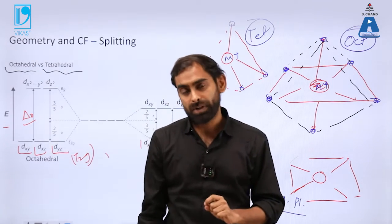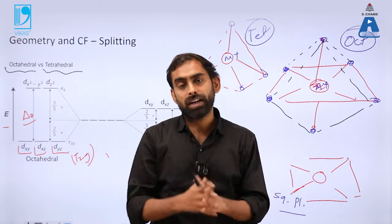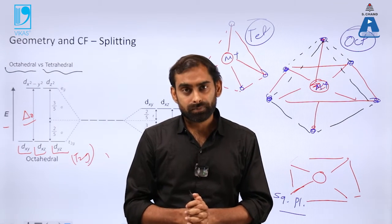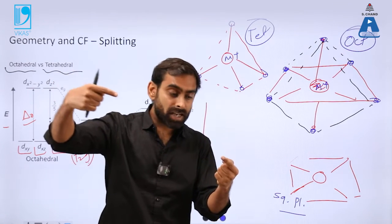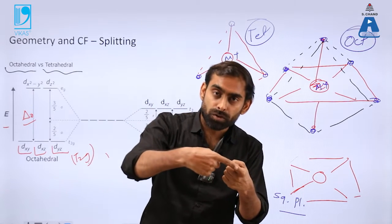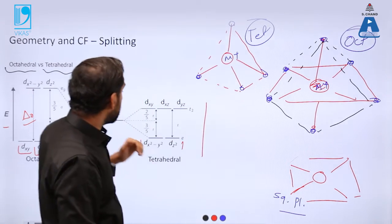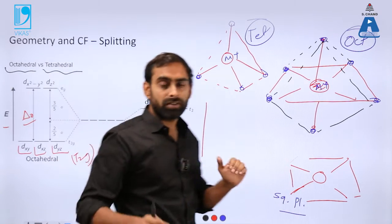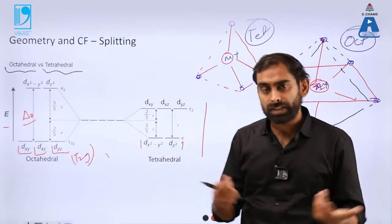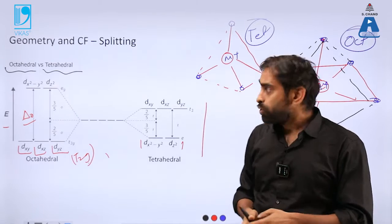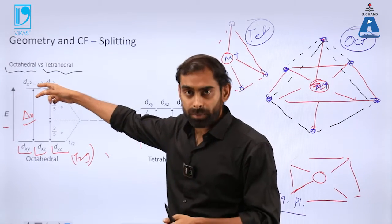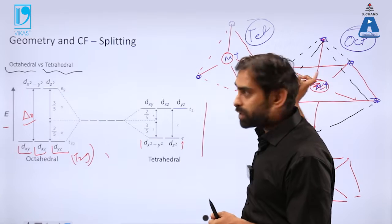So if a ligand is capable of directly head-on moving towards d orbital and it is making a good overlap, it will extend that energy level to a higher energy state, kind of destabilize.